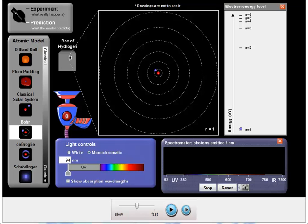We are going to use this simulation to look at how the line spectra are generated through the Bohr model to explain the results that you saw in the lab.